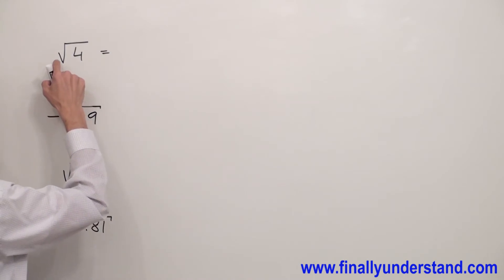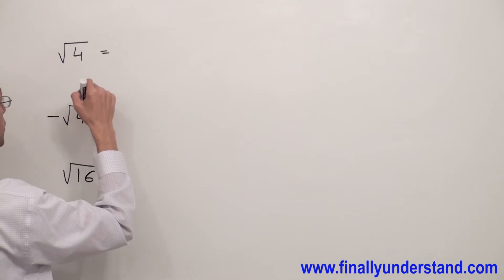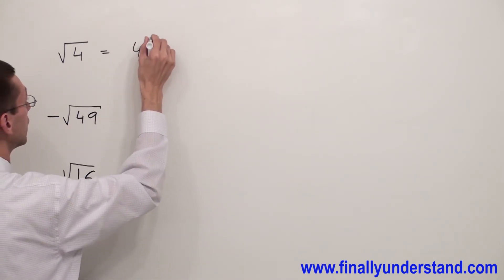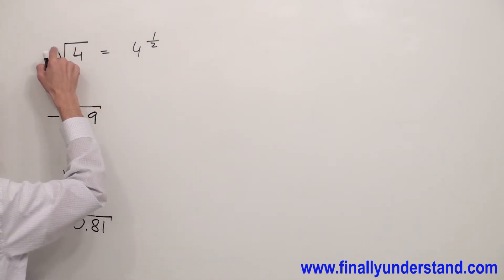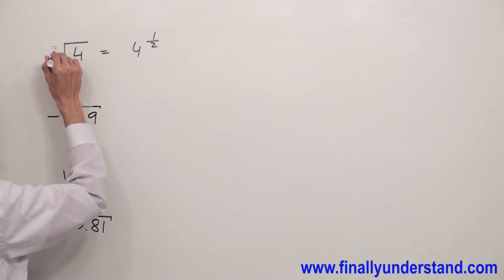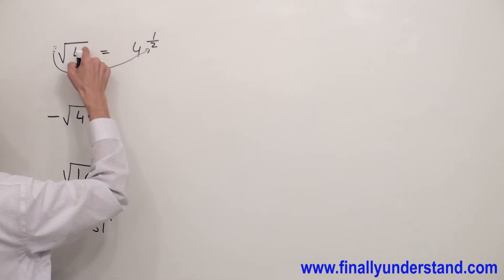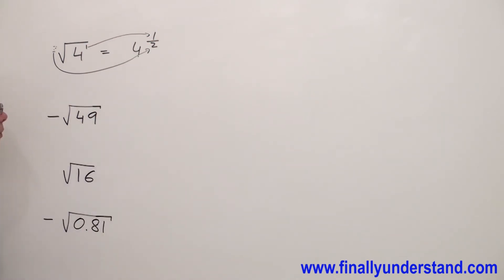I have square root of 4. I can write this radical in the exponential form by simply writing 4 to power 1 half. Remember, anytime we have no index, there is always an invisible 2. That invisible 2 goes always to the denominator of my exponent. Anytime there is no exponent next to the radical, there is also always an invisible 1. This invisible 1 goes to the numerator of my exponent.